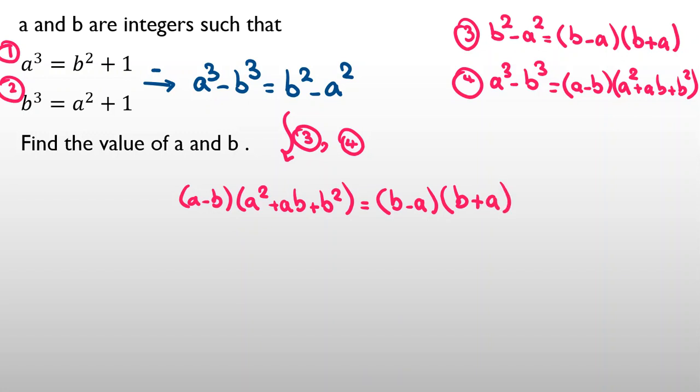Now I see A minus B and B minus A — I can factor. If A minus B is not zero, I can divide. So we split into cases: case one, A minus B equals zero.